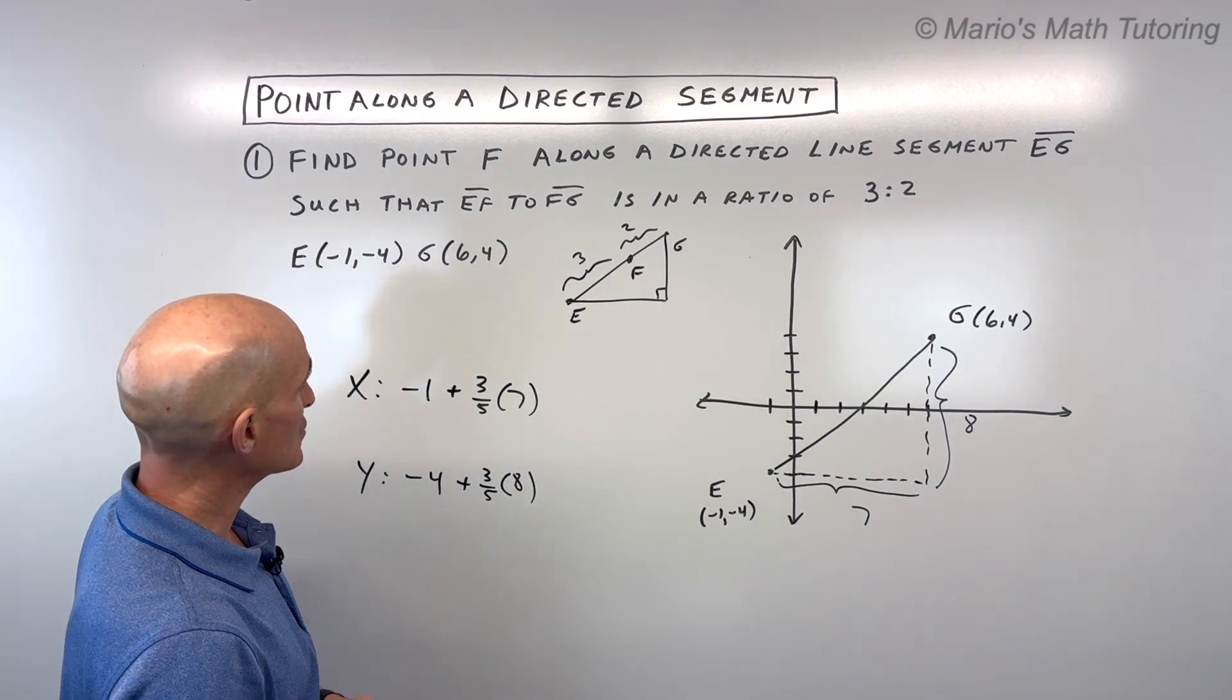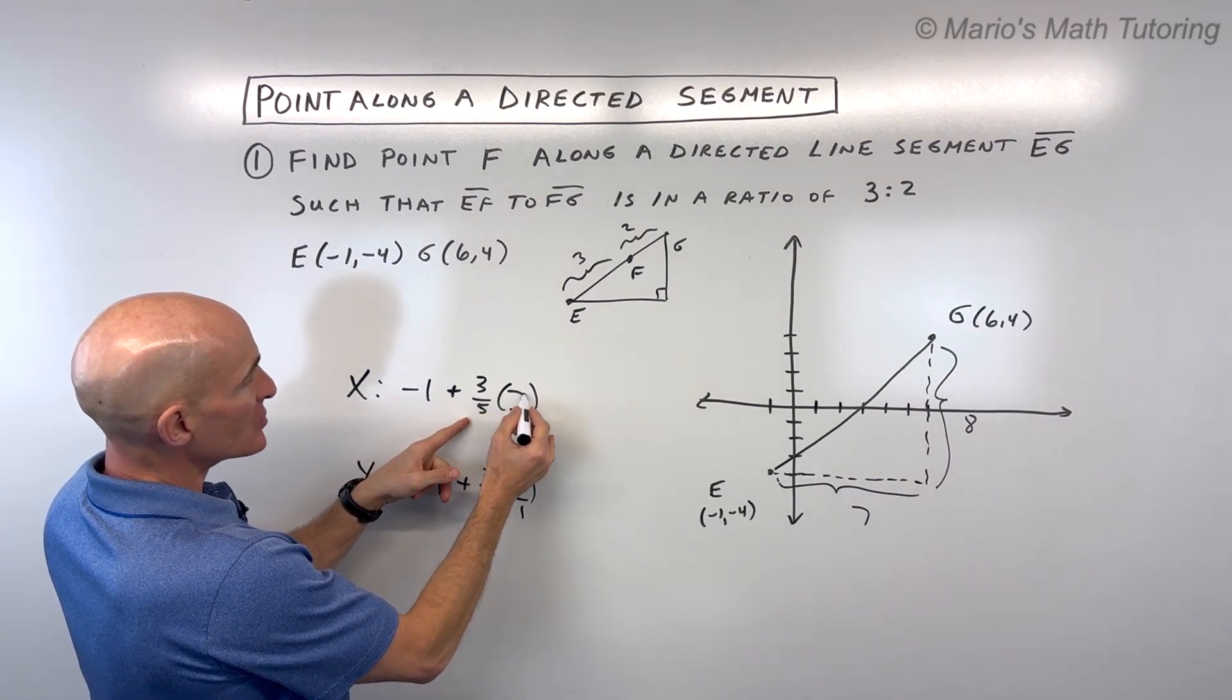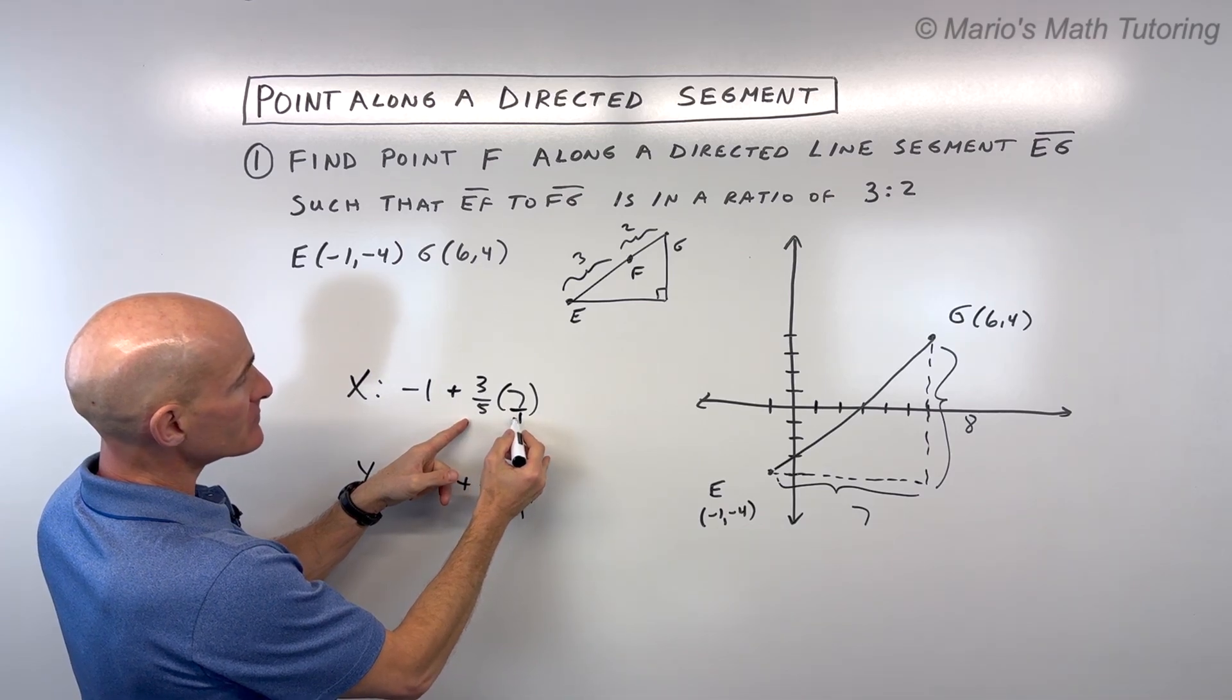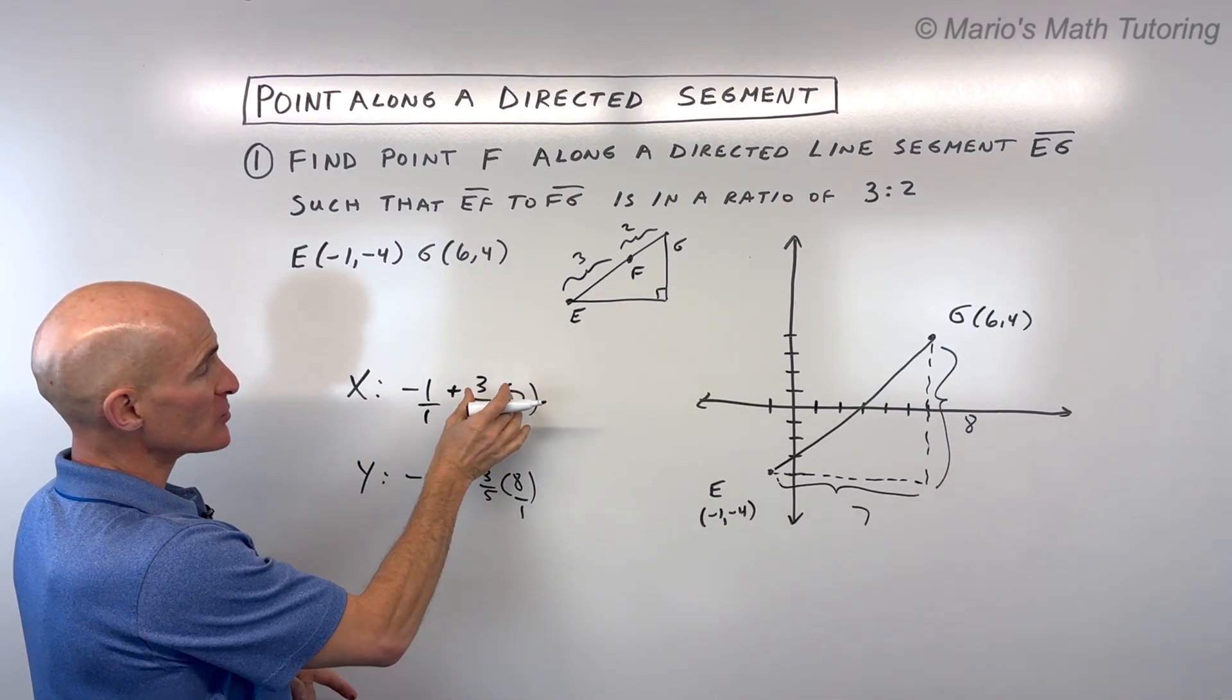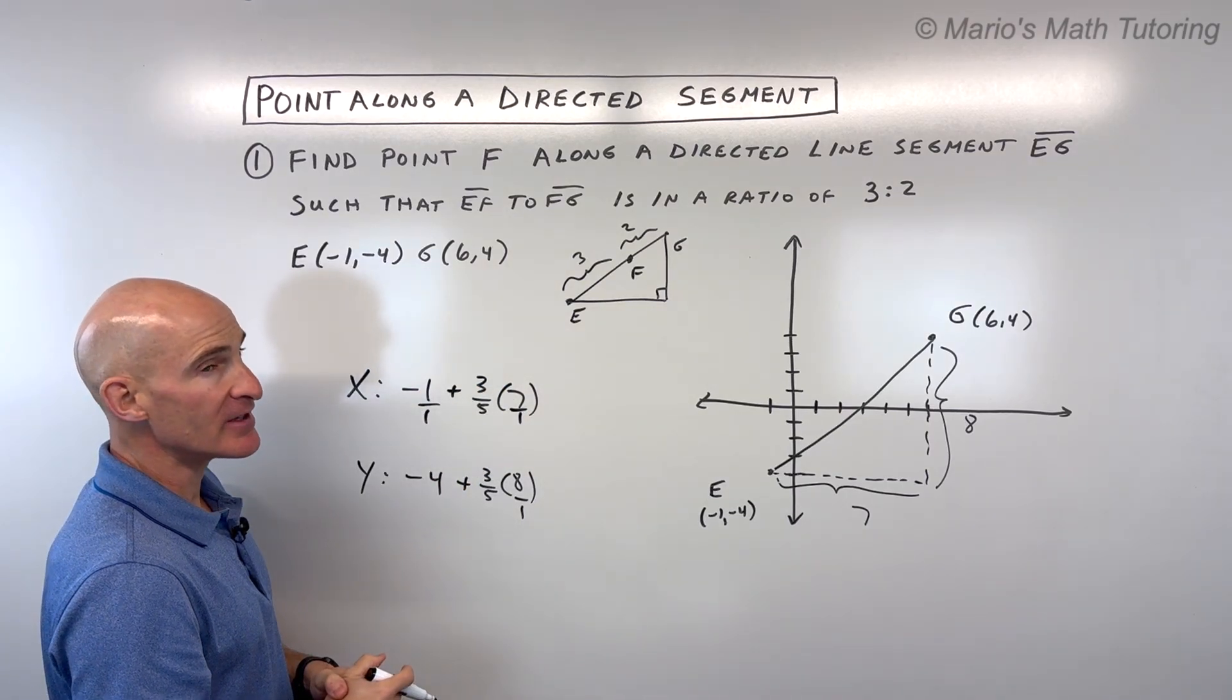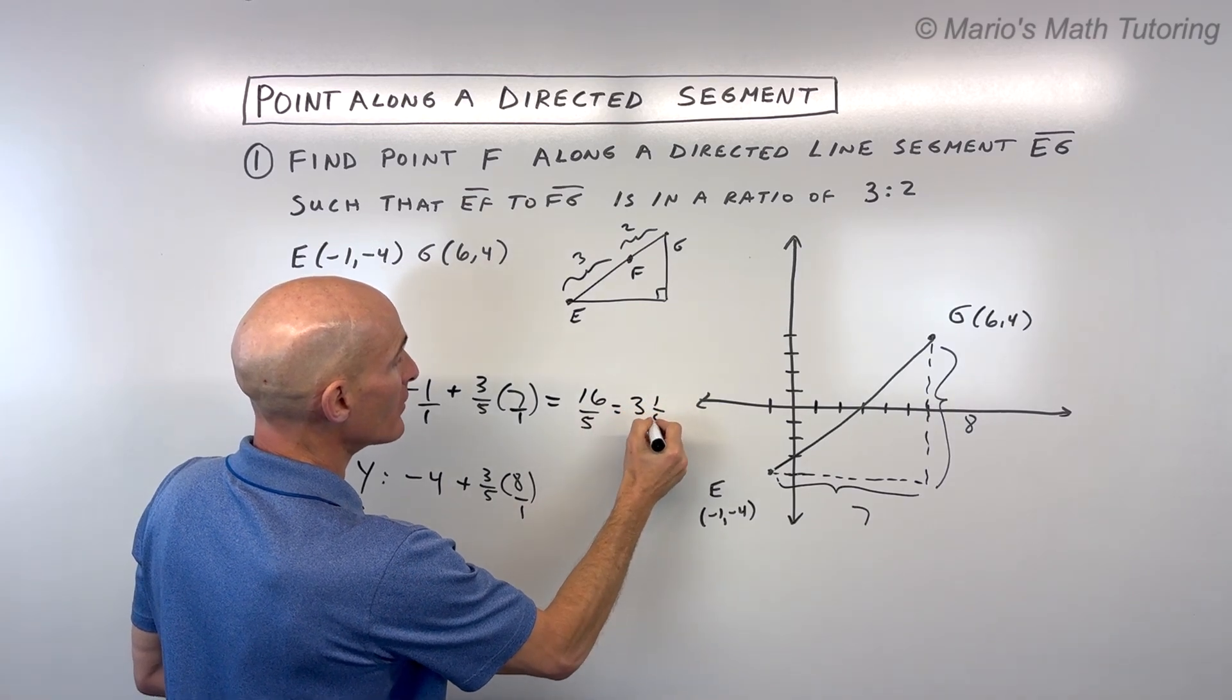Okay, so let's go ahead and do that. So 7 is like 7 over 1, 8 is like 8 over 1. So this comes out to 21 over 5. And negative 1 is like negative 5 over 5. So 21 plus negative 5 is 16 over 5, which is 3 and 1 fifth.